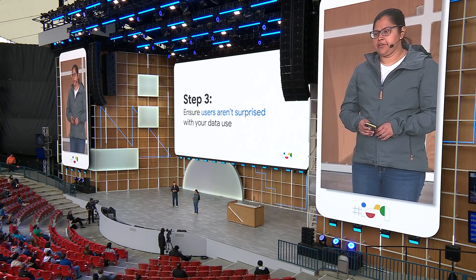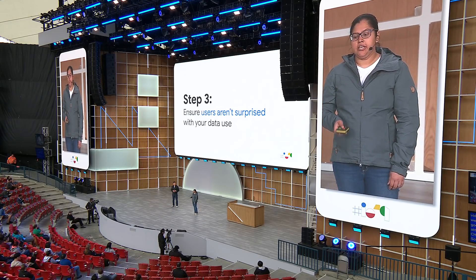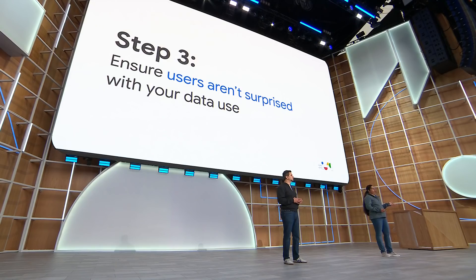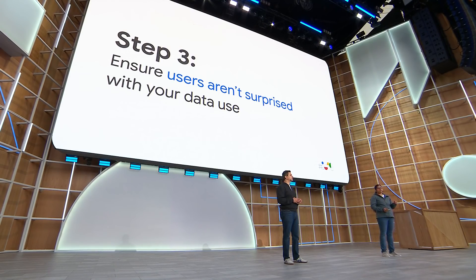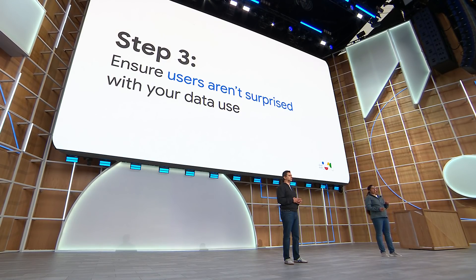Now you've got your app's runtime permissions. You now have a responsibility to use the data appropriately. Step three: ensure users are not surprised with your data usage. Best practices: one, collect only the data that you need; two, only share data once you get explicit user consent; three, if you're transferring data off the device, ensure it is encrypted and secure; four, only keep data for as long as you need it. By following these best practices, your users will feel more comfortable with how their data is being used.